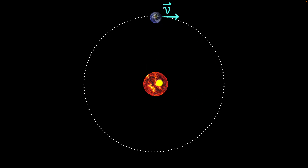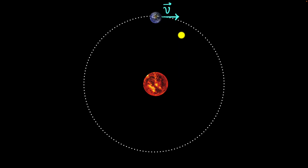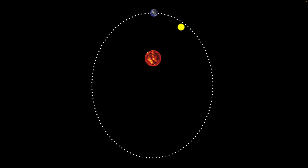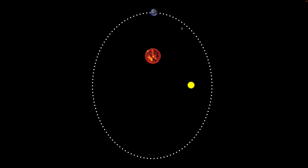This only works if the Earth has that particular specific velocity. But what happens if it doesn't? What happens if it has slightly bigger or slightly smaller velocity? Well, if it has a bigger velocity it'll go away from the circle — the path will look somewhat like this. If it has a smaller velocity, it'll also go away from that circle. And in general, the orbit will not be a circle. Instead, it will look like this — this is called an ellipse.